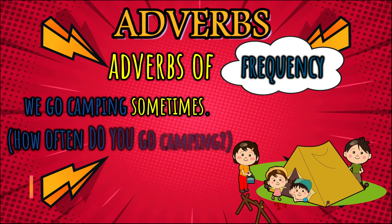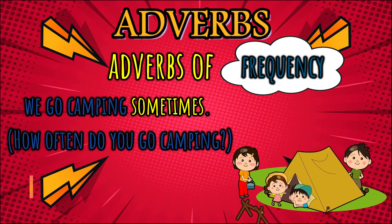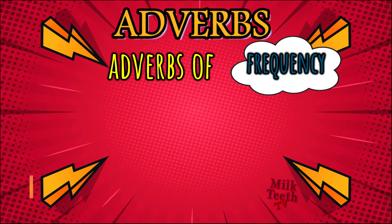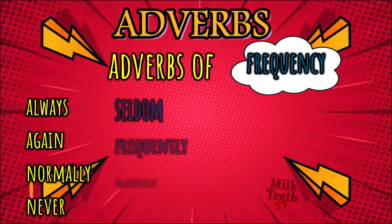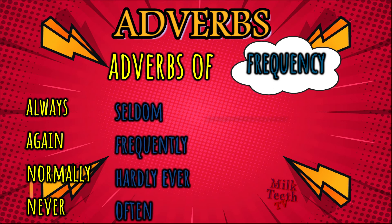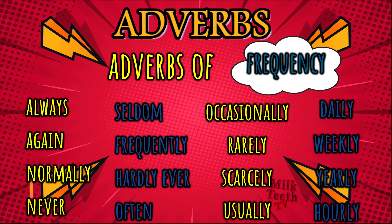We go camping sometimes — 'camping' is the verb, and how often do we go camping? Sometimes. So 'sometimes' is the adverb of frequency. More words used as adverbs of frequency: always, again, normally, never, seldom, frequently, hardly ever, often, occasionally, rarely, scarcely, usually, daily, weekly, yearly, hourly.